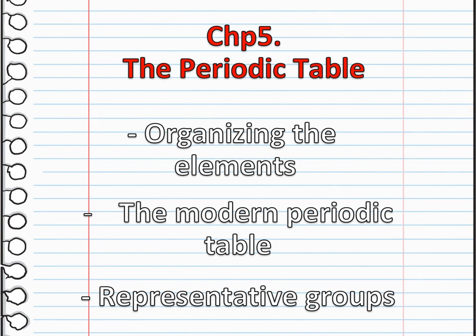Moving to Chapter Five, which is the Periodic Table. We are going to talk about organizing the elements, the modern periodic table, and the representative groups. The periodic table arranges the chemical elements into rows and columns — it is an organizing icon of chemistry and is widely used in physics and other sciences. We will understand how each element is organized, why it is organized that way, and the characteristics of each element based on the rows and columns.